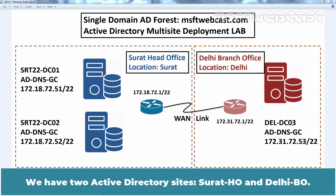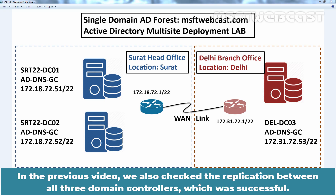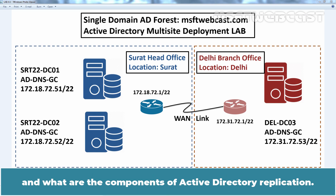We have two Active Directory sites, Surat-HO and Delhi-BO. We have two domain controllers in the Surat-HO site and one domain controller in the Delhi-BO site. In the previous video, we also checked the replication between all three domain controllers, which was successful. Now let's try to understand how Active Directory replication topology works and what are the components of Active Directory replication.